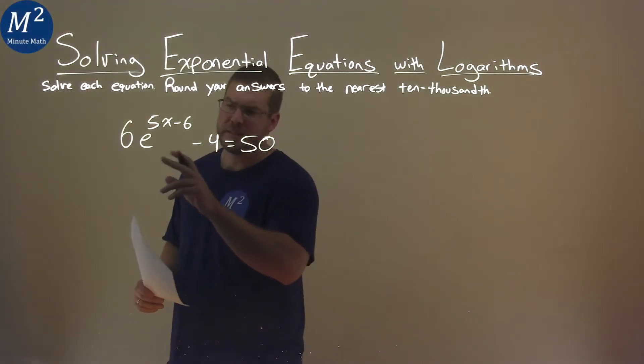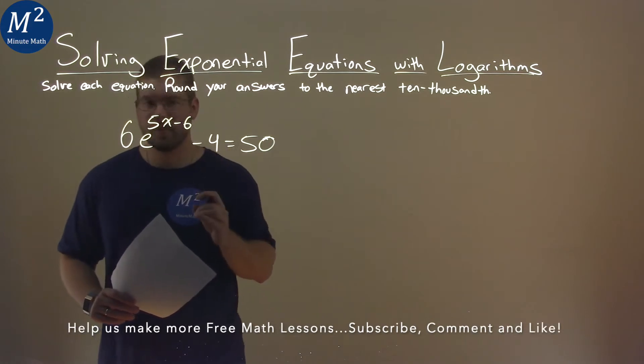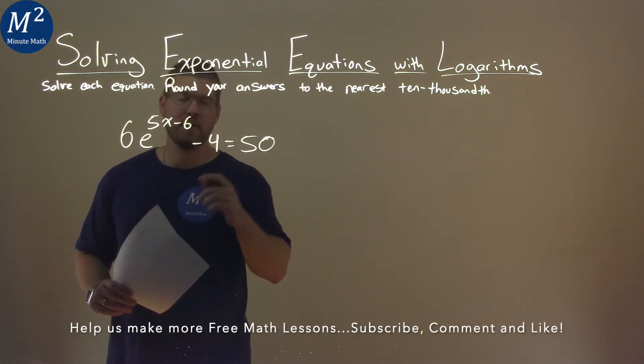I'm given this problem right here. 6 times e to the 5x minus 6 power minus 4 equals 50, and we have to solve this.